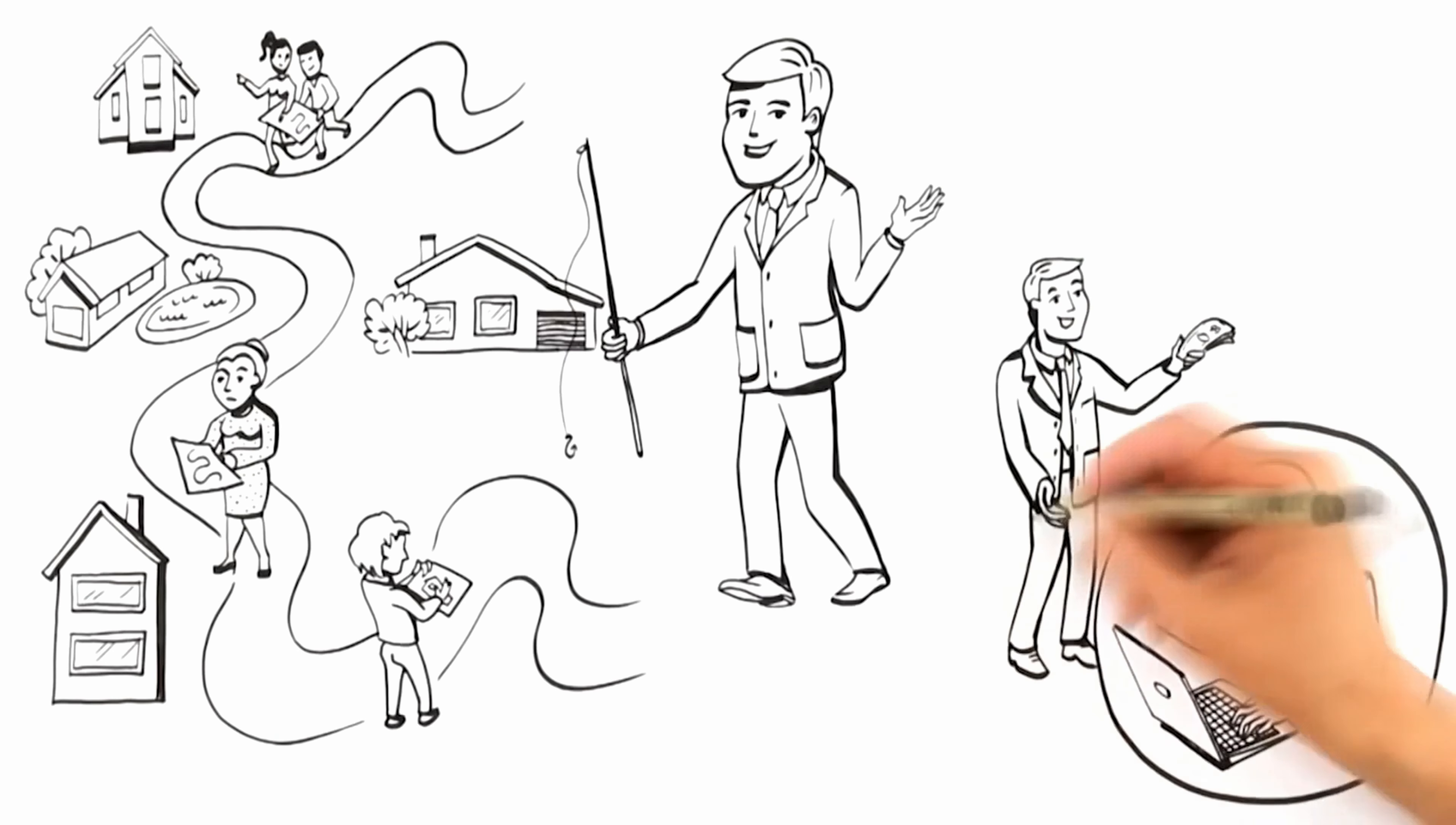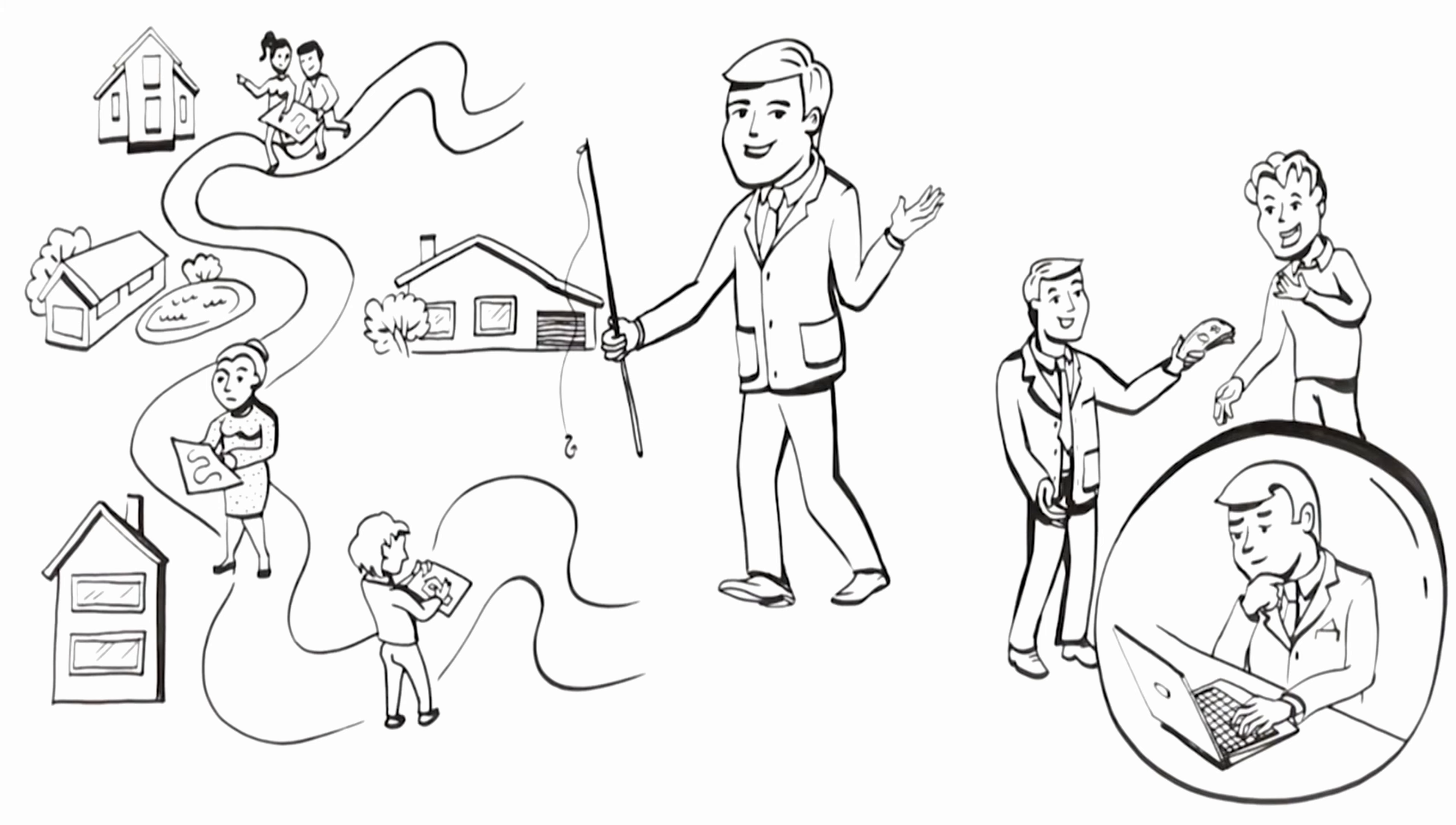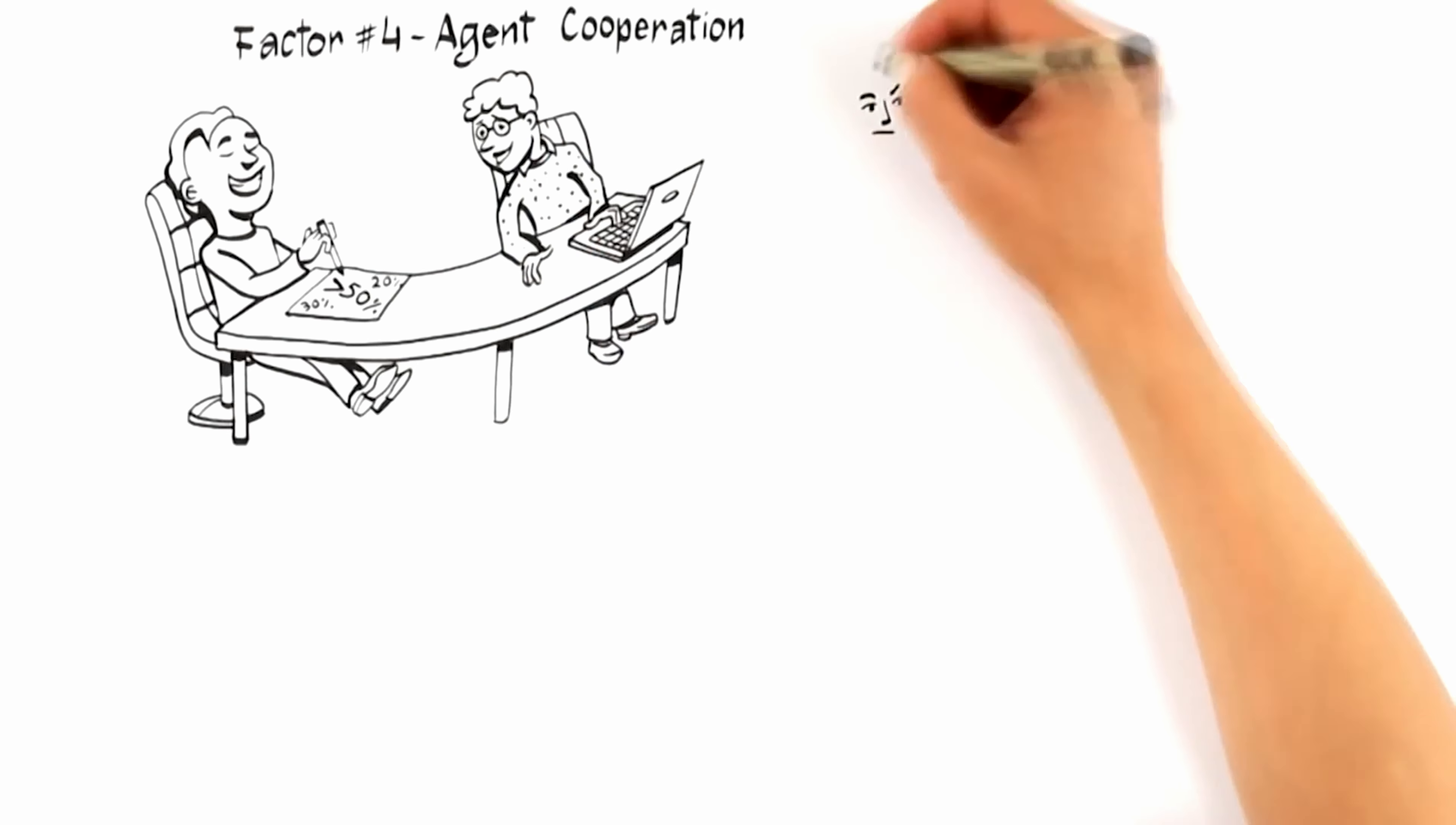Now, a widely known but little discussed selling factor that significantly increases the likelihood of you getting a top dollar offer is factor number four: agent cooperation. Agent cooperation simply predicts that there is a greater than 50% chance that once your home is exposed to the market, another real estate professional will bring you a buyer.